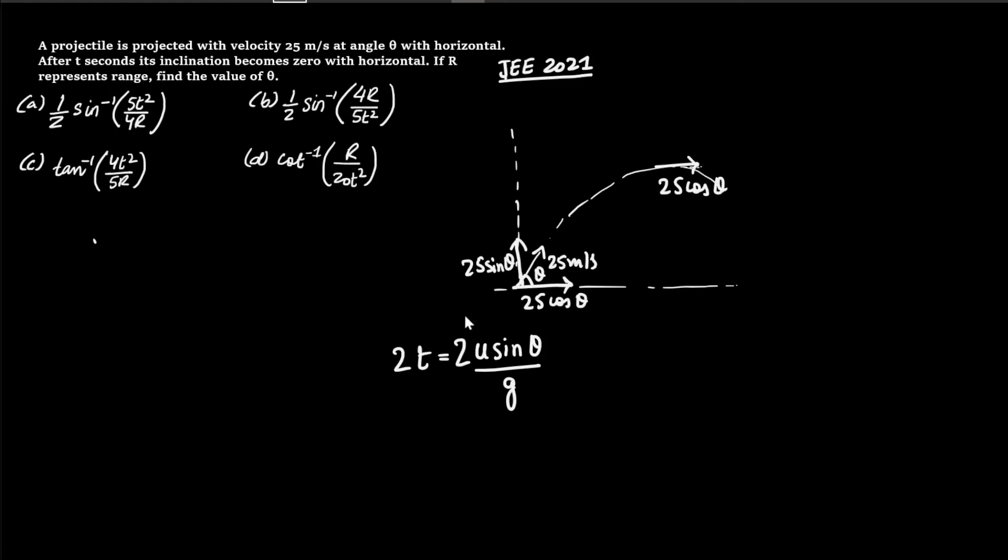Now the range that it travels, it can be given by the following. So if we see the total time for which this object was in that trajectory was 2t, so it undergoes 25 cos theta, acceleration in the horizontal direction, for times 2t.